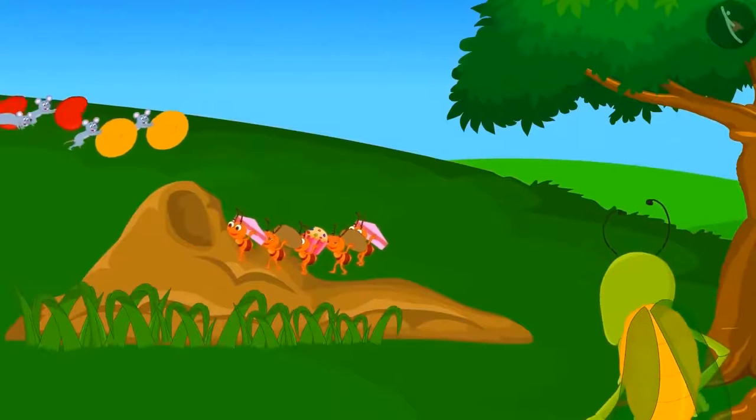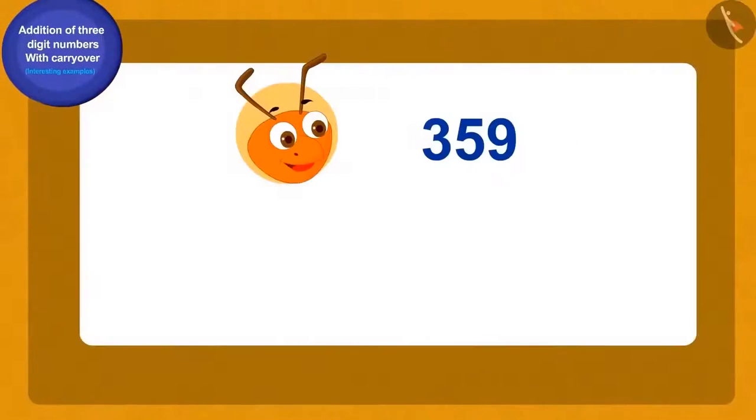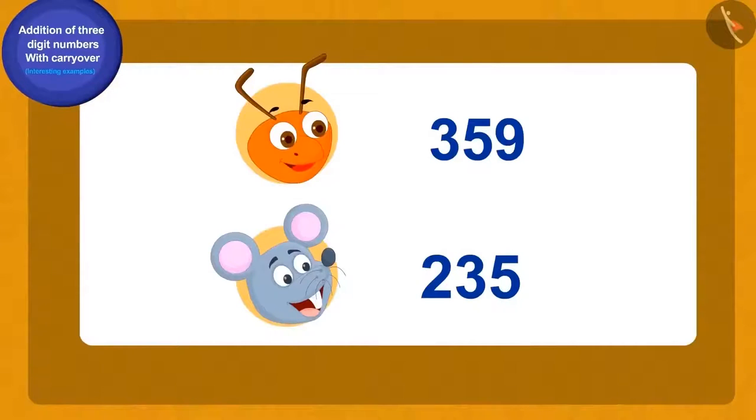The next day, the grasshopper saw more ants and rats in the herd. Now, there were 359 ants and 235 rats. Let us now see the total number of animals.